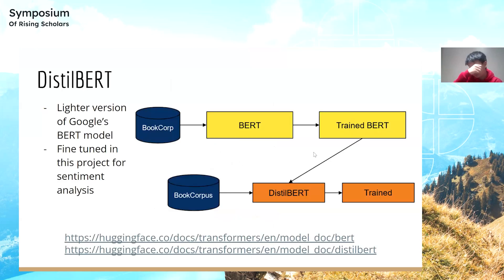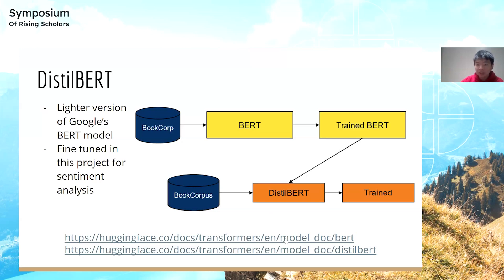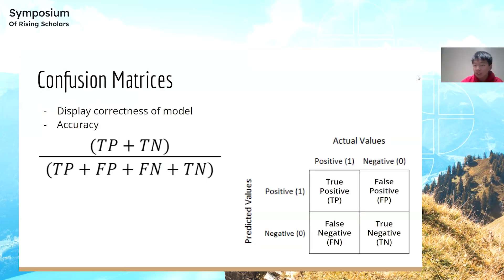Finally, I fine-tuned DistilBERT, which is a lighter version of Google's BERT model. BERT is strong for classification tasks because it's trained on a massive dataset — Google likely spent millions of dollars to train it. The first two letters of BERT's acronym stand for 'bidirectional encoding,' which gives it a better understanding of language compared to classic models. For more detail, you can visit the Hugging Face documentation for BERT and DistilBERT.